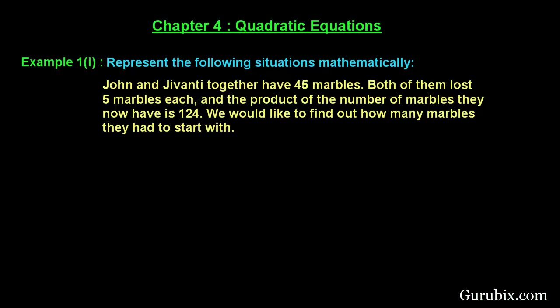Welcome friends, let us solve the first part of example number one of chapter 4. The example says: represent the following situation mathematically. The situation is: John and Jivanti together have 45 marbles. Both of them lost five marbles each, and the product of the number of marbles they now have is 124. We would like to find out how many marbles they had to start with.